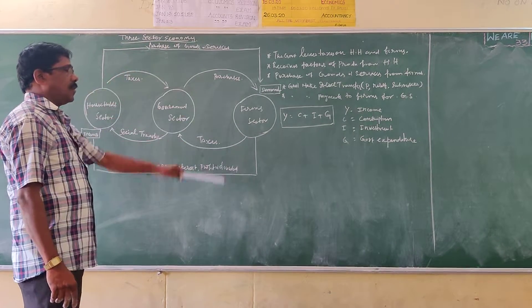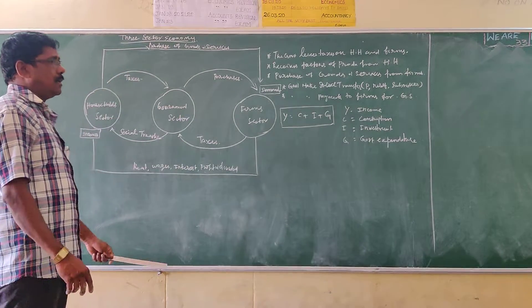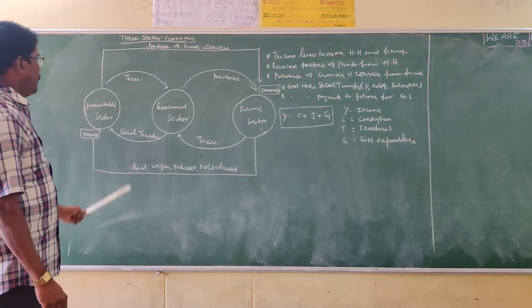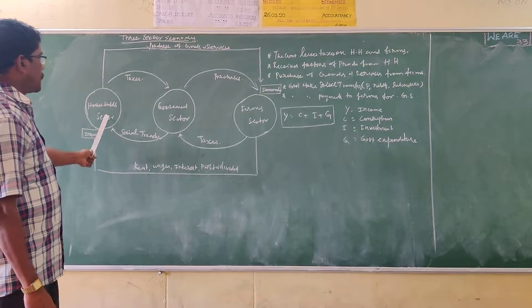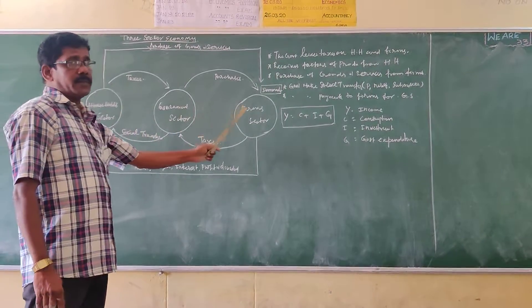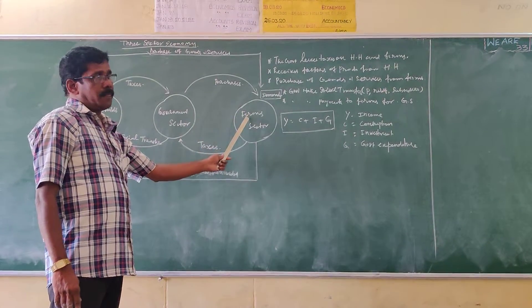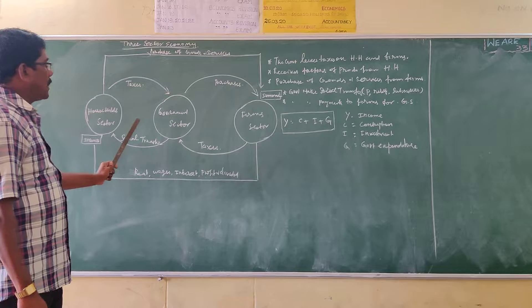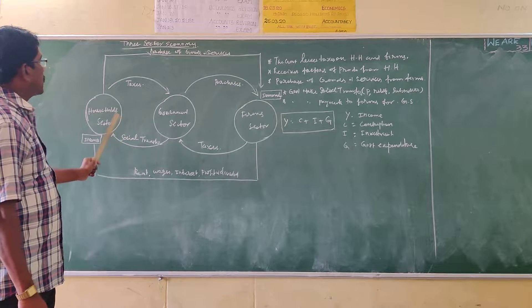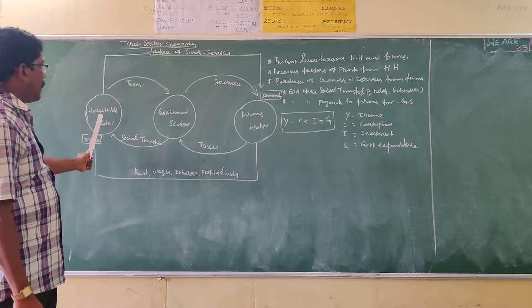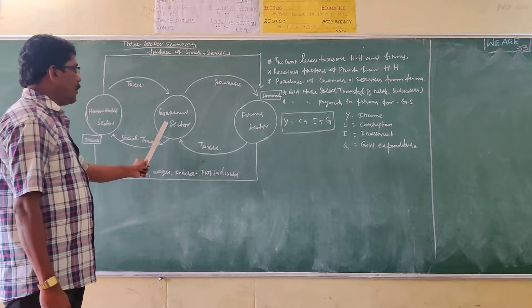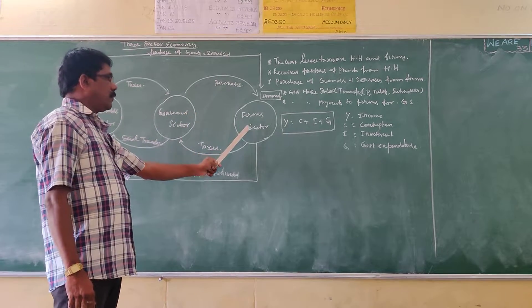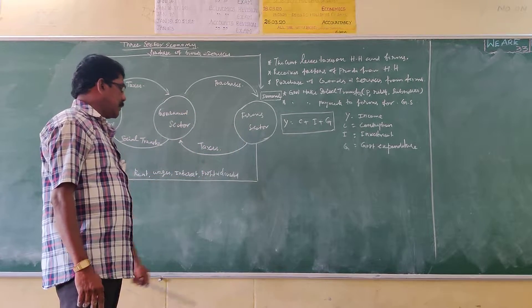In the previous case, we saw only two sectors, namely the household sector and the firm sector. In the three-sector model, we have the household, government, and firm sectors.